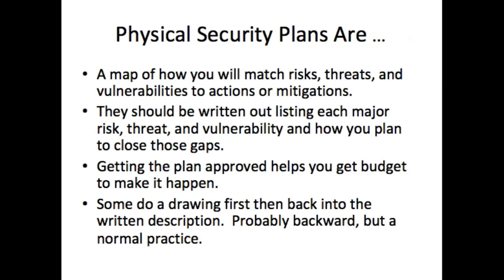A physical security plan matches risks, threats, and vulnerabilities to actions or mitigations. A mitigation is something you do to close a security hole. For example: I have a front door. A mitigation to someone opening that door is a lock. Another mitigation may be a deadbolt, a third may be dogs, a fourth may be weaponry, a fifth may be an alarm system. Those are all mitigations to the potential for someone to come in through the front door.